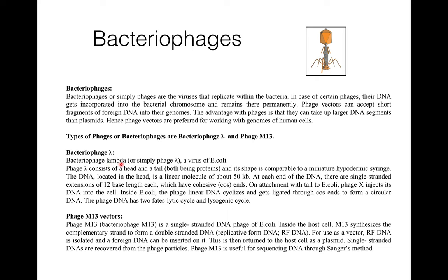Types of bacteriophages include bacteriophage lambda and phage M13. Bacteriophage lambda is a virus of E. coli; it consists of a head and a tail, both made up of protein, and its shape is comparable to a miniature hypodermic syringe. The DNA is located in the head and is a linear molecule of about 50 kb. At each end of the DNA there are single-stranded extensions of 12 bases in length, which are known as cohesive ends. On attachment to E. coli, the phage injects its DNA into the cell, where the linear DNA circularizes and gets ligated through cohesive ends to form circular DNA. The phage DNA may follow either a lytic cycle or a lysogenic cycle.